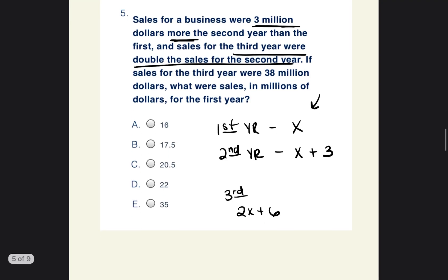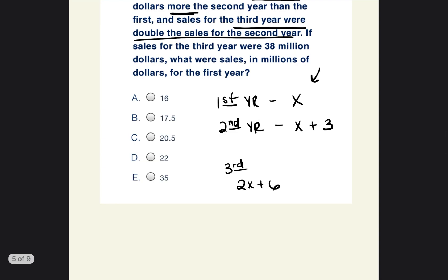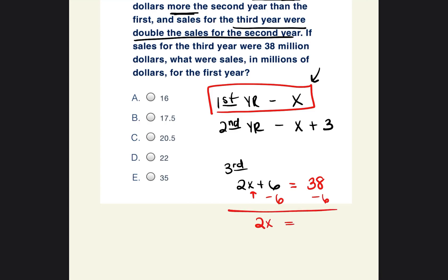The question tells us that the third year's sales were $38 million. So 2X plus 6 equals 38. Subtracting 6 from both sides gives 2X equals 32. Dividing both sides by 2, X equals 16. We're talking about millions, so X equals $16 million. And since X represents the first year's amount, the first year's sales were $16 million.